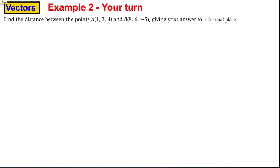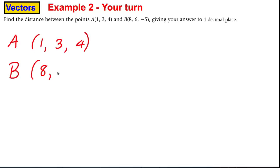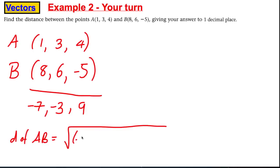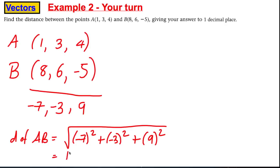Let's apply it. Find the distance between points A and B. I prefer writing out the coordinates and subtracting them — writing them underneath each other makes it easier. 1 − 8 = −7, 3 − 6 = −3, 4 − (−5) = 9. So the distance AB = √((−7)² + (−3)² + 9²). Working that out on the calculator gives, to one decimal place, 11.8 units.